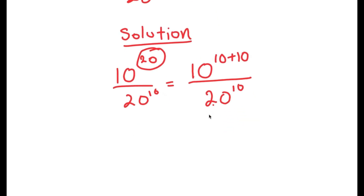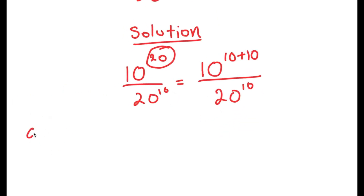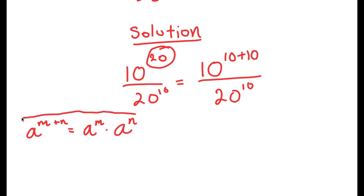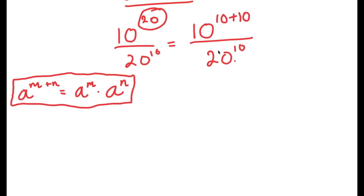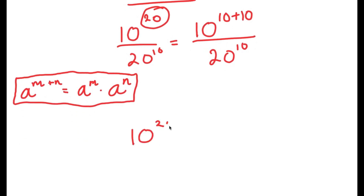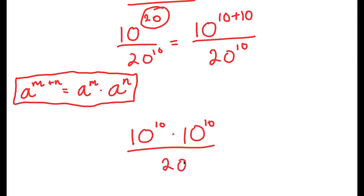The reason I did that is to use the property a to the power of m plus n equals a to the power of m times a to the power of n — an important property of exponents. Applying this to 10 to the power of 10 plus 10, treating both 10s as m and n, we get 10 to the power of 10 times 10 to the power of 10, all over 20 to the power of 10.